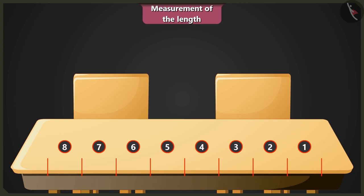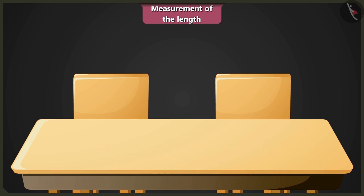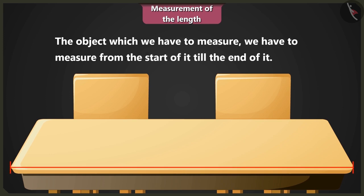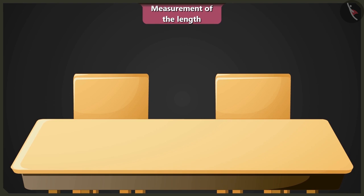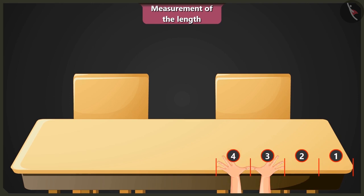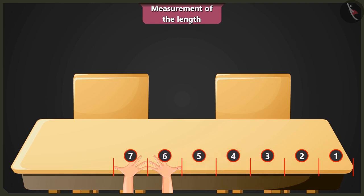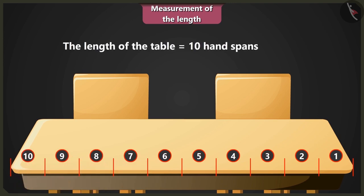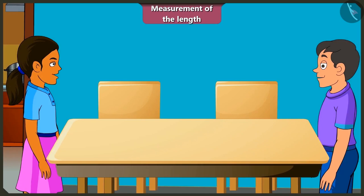Oh Gertu, that is not how you take the measurement. Then how is it done? Look, when you have to measure the length of an object, you measure from one end to another end of it. You have to measure the length of this table from here till here. Okay, I have understood. Then 1, 2, 3, 4, 5, 6, 7, 8, 9 and 10. The length of this table is equal to 10 handspans of my palm. This is the correct measurement.